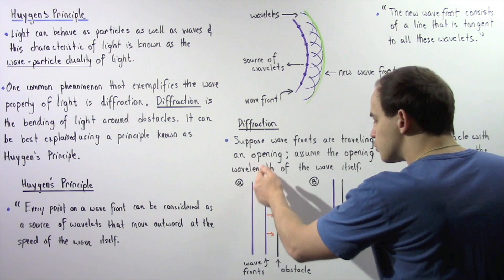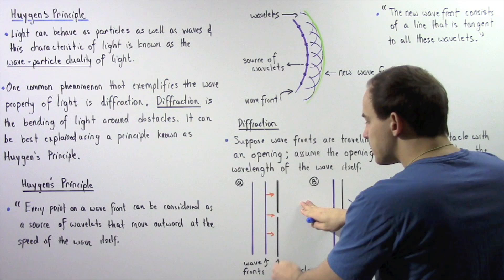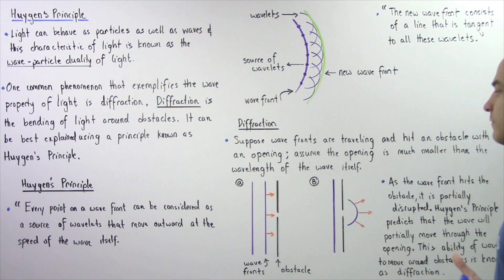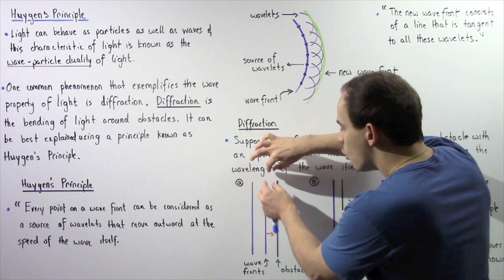These are our two wave fronts. They're propagating along the following direction. Eventually they hit the following obstacle and this obstacle has a small opening as shown. Assume that the opening is much smaller than the wavelength of the wave itself.